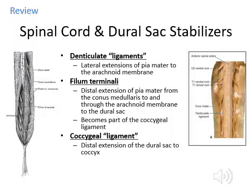The pia mater is the thin connective tissue directly attached to the spinal cord. Some extensions extend out laterally — those are the denticulate ligaments, which anchor the spinal cord so it doesn't flop around in the cerebrospinal fluid. At the very tip, the pia mater forms the filum terminale, connecting the spinal cord to the dural sac. The dural sac distally forms the coccygeal ligament, which attaches to the coccyx.